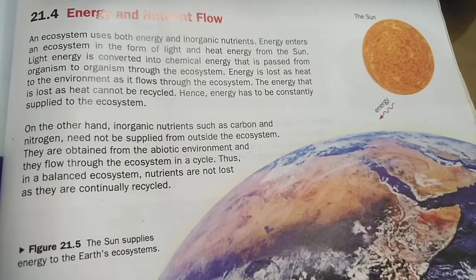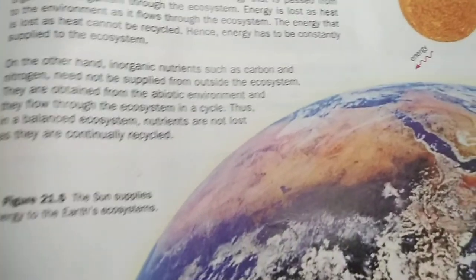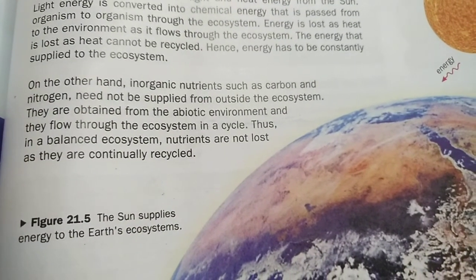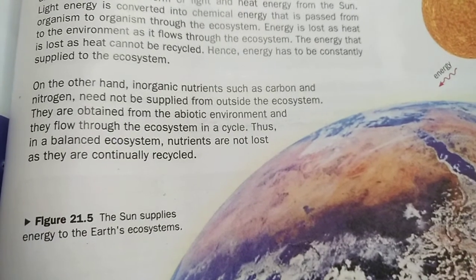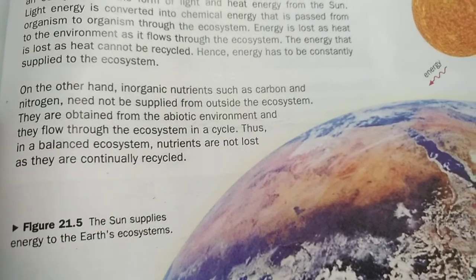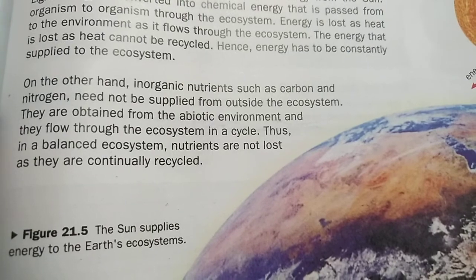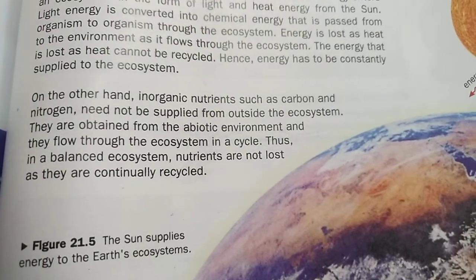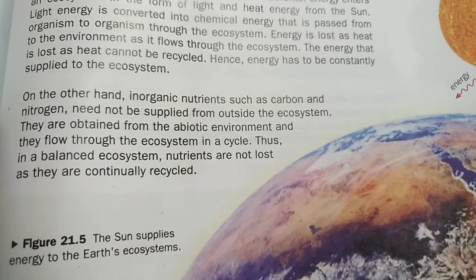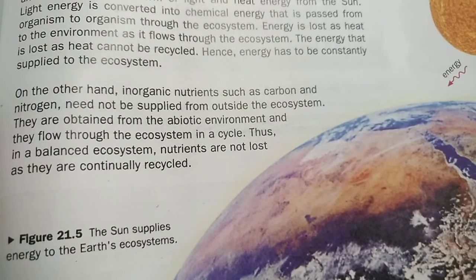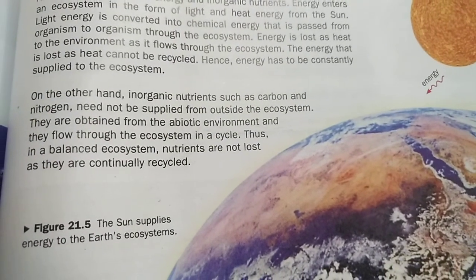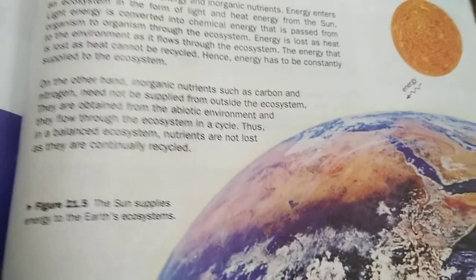The sun is the basic source of energy. On the other hand, inorganic nutrients such as carbon and nitrogen need not be supplied from outside the ecosystem — they are obtained from the abiotic environment and they flow through the ecosystem in a cycle. Thus, in a balanced ecosystem, nutrients are not lost as they are continually recycled, obtained either directly from the air or taken by plants from the soil.